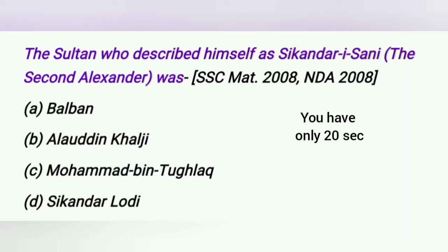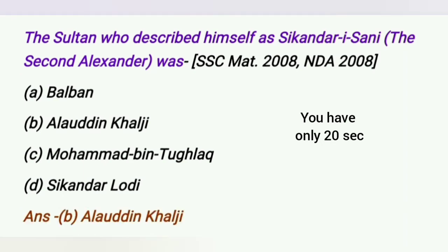The Sultan who described himself as Sikandar-e-Sani, the second Alexander, was: A. Balban, B. Alauddin Khalji, C. Muhammad bin Tughlaq, D. Sikandar Lodi. The answer is Alauddin Khalji.